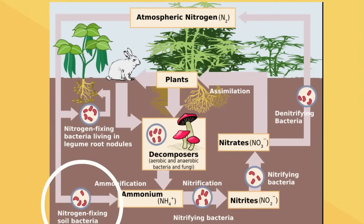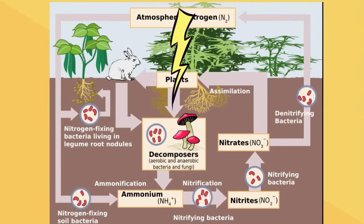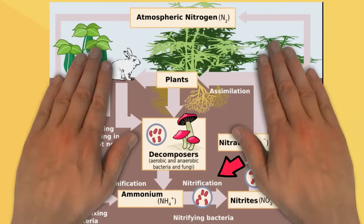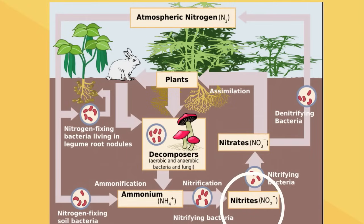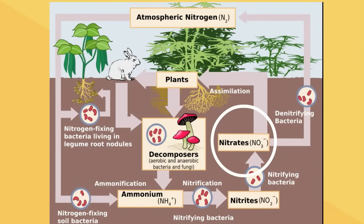Lightning in the atmosphere can also perform nitrogen fixation. Ammonia is toxic, so additional bacteria combine this ammonia with oxygen in a process called nitrification. At this point the nitrogen is in a form called nitrite, and additional nitrifying bacteria then convert this nitrite to nitrate.